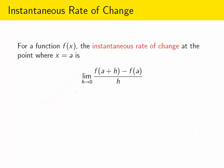Here's the definition. For a function f of x, the instantaneous rate of change at a point is calculated from this limit. This limit is exactly what we were just looking at, right? It's the slope of the line that connects those two points on the graph.